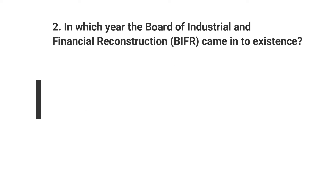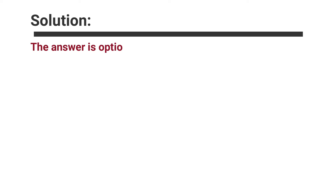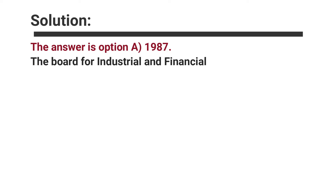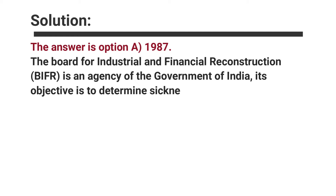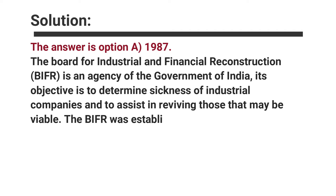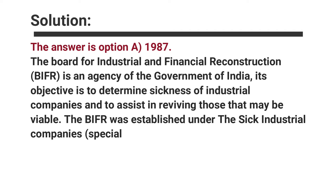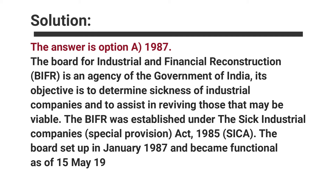Question number two: In which year did the Board of Industrial and Financial Reconstruction come into existence? Options are A. 1987, B. 1984, C. 1989, D. 1981. The answer is option A, 1987. The Board for Industrial and Financial Reconstruction (BIFR) was an agency of the Government of India. Its objective was to determine sickness of industrial companies and to assist in reviving those that may be viable. The BIFR was established under the Sick Industrial Companies (Special Provision) Act 1985 (SICA). The Board was set up in January 1987 and became functional as of 15 May 1987.